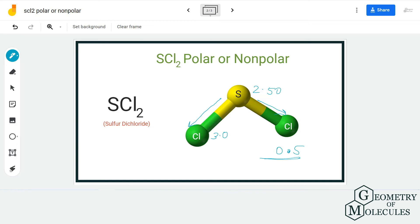As it has a bent molecular geometry, it cannot cancel each other out. As a result, there is a non-zero dipole moment in this molecule which makes SCL2 a polar molecule.